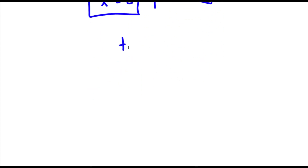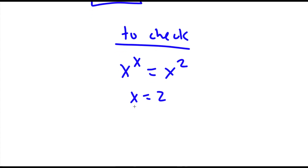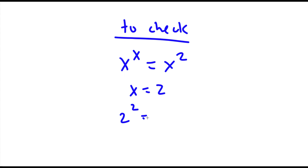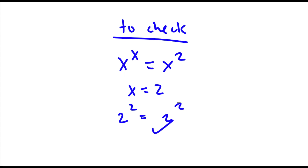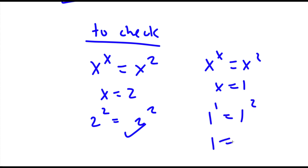Now to check with x to the power of x equals x to the power of 2: if I plug in x equals 2, I get 2 to the power of 2 equals 2 to the power of 2, which is correct. And if I plug in x equals 1, I get 1 to the power of 1 equals 1 to the power of 2, and since 1 to the power of 1 is 1 and 1 to the power of 2 is also 1, this is correct as well.